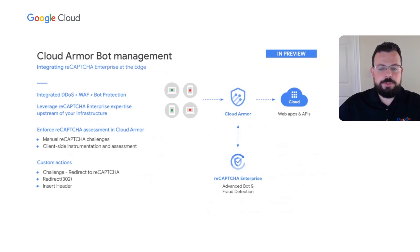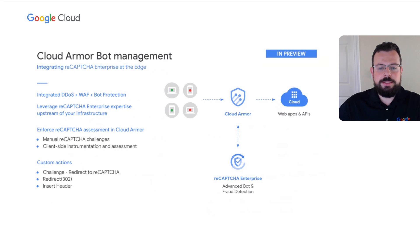In addition to the reCAPTCHA integration, Cloud Armor bot management introduces an enhanced set of capabilities designed to help you deploy an effective bot management strategy. These capabilities include additional rule actions to redirect traffic, as well as the ability to insert a custom header into suspicious requests but otherwise allowing them to reach your workload. Customers use this custom header to tag suspicious traffic for alternative processing in their workloads, like sending to a honeypot or not completing a fraudulent transaction without notifying the bot that it was detected.